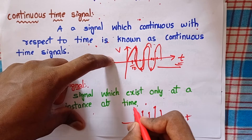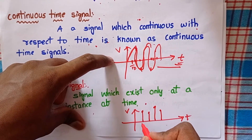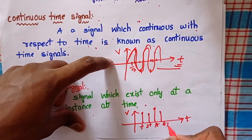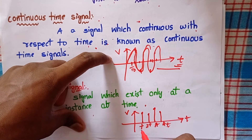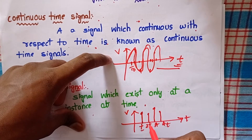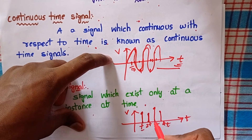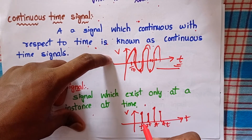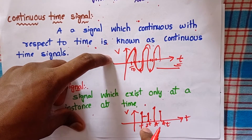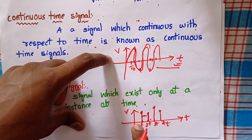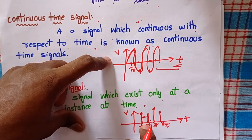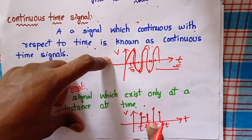Consider this example. Suppose this is the time axis and this is the voltage axis. At time T, a signal exists; at time instance 2T we have a signal; 3T also we have a signal; 4T also we have a signal. But in between T and 2T we don't have any signal. So the signal exists only at particular instances of time — T, 2T, 3T — and in between those instances the signal is absent.